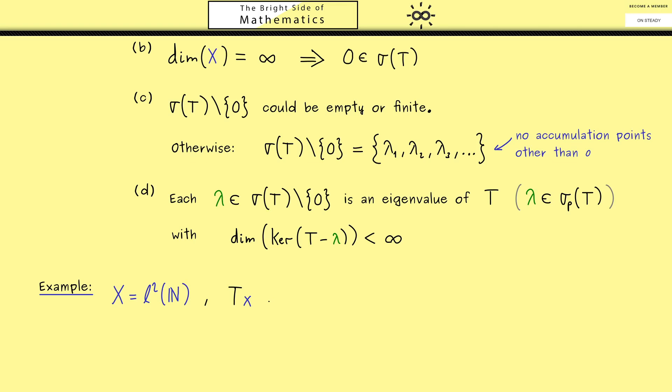And indeed it's not so complicated to find one. We just define Tx to be the sequence 1 over j times x_j. Now of course this is a well defined linear and bounded operator but also compact.